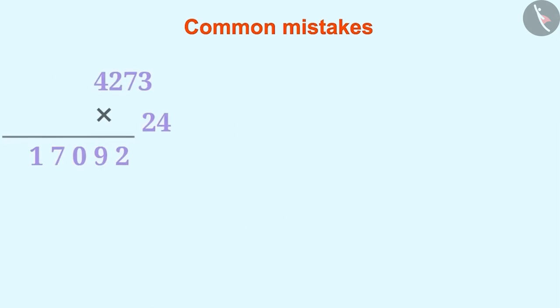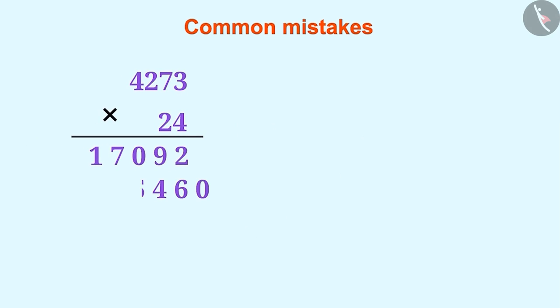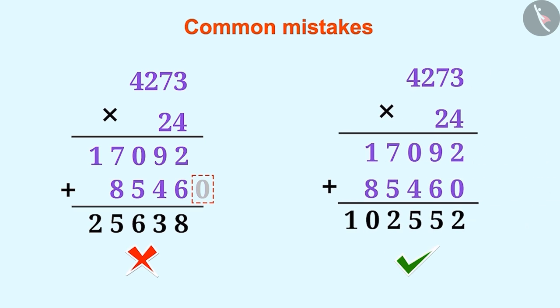While multiplying two numbers, the zeros used for the place values are ignored. Such mistakes arise due to lack of understanding the place values.